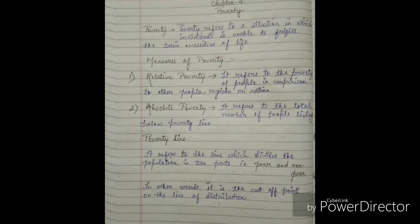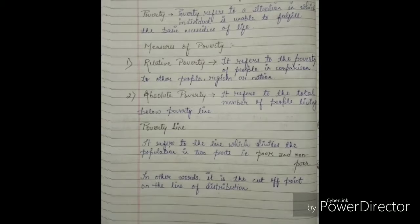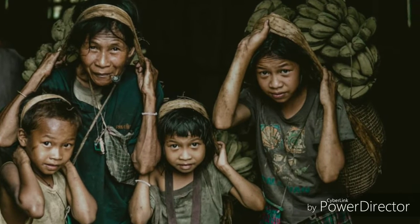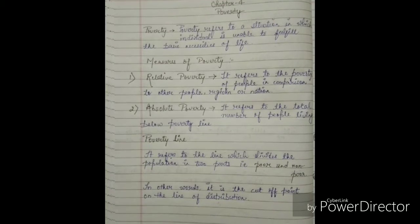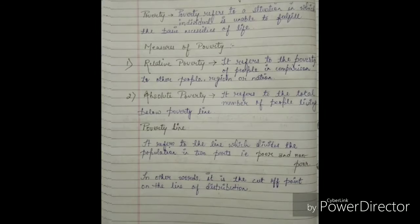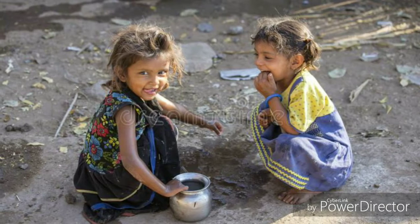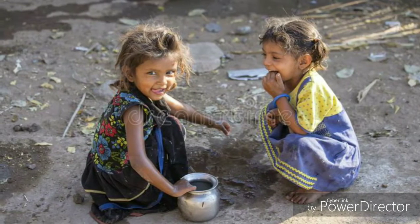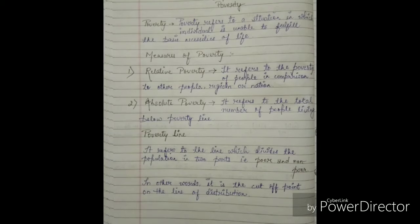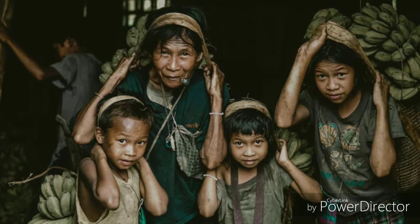Let's see the definition of the word poverty. Poverty refers to a situation in which an individual is unable to fulfill the basic necessities of life. It is a situation where one is not able to feed his family, does not have shelter, housing, or clothing. These are the basic requirements every human being needs, and if anyone lacks these, the person is termed as below poverty line or poor.